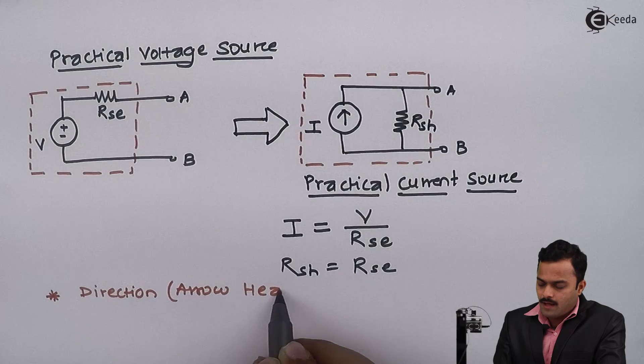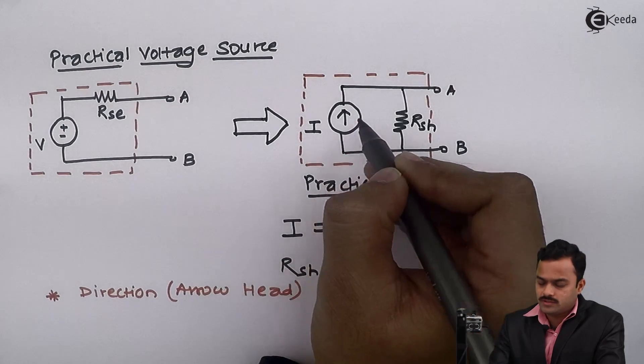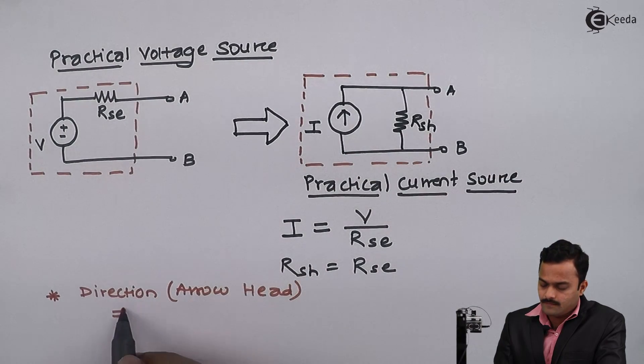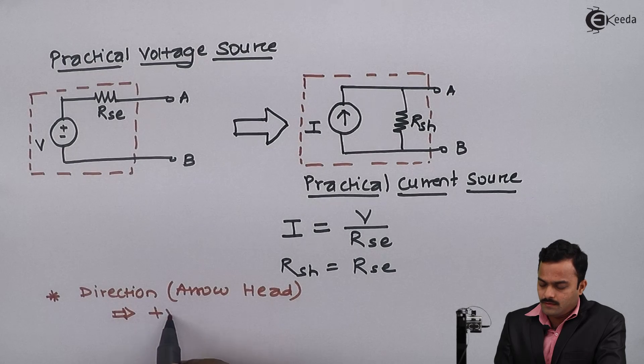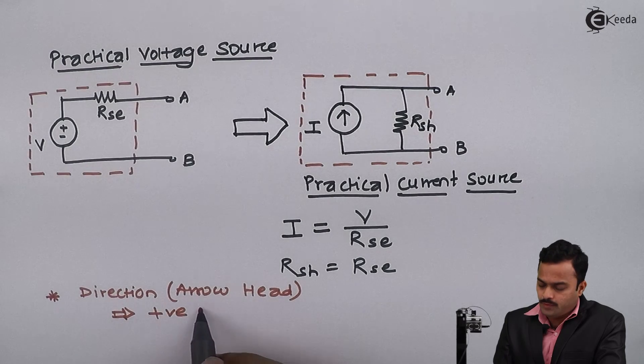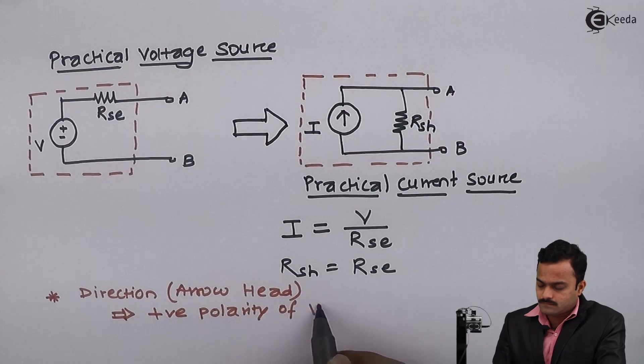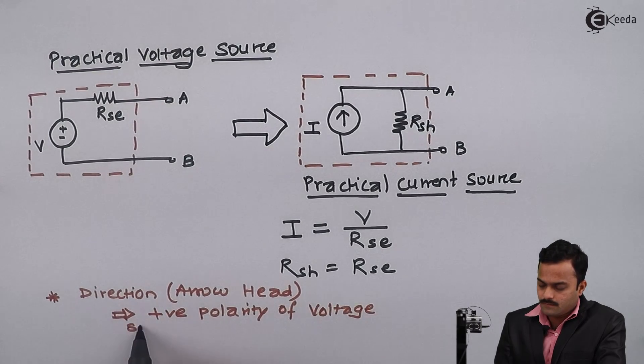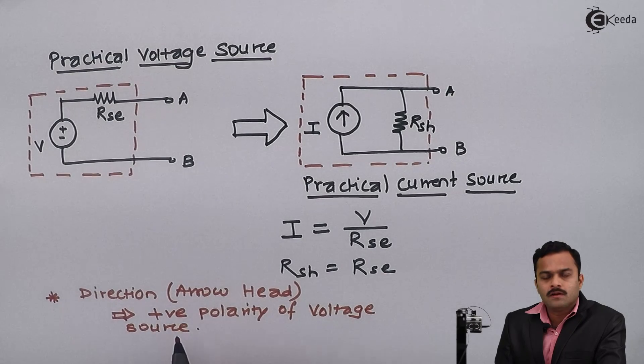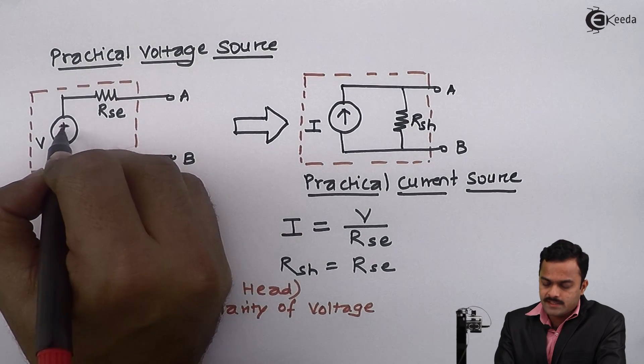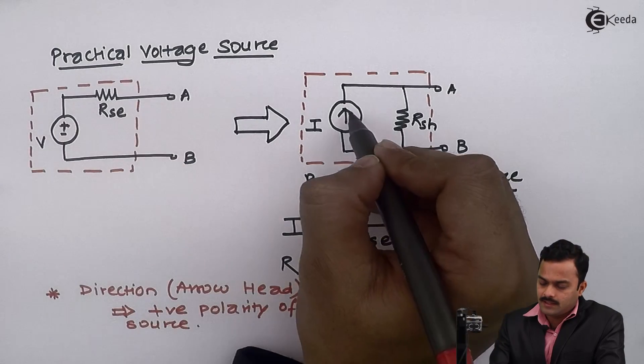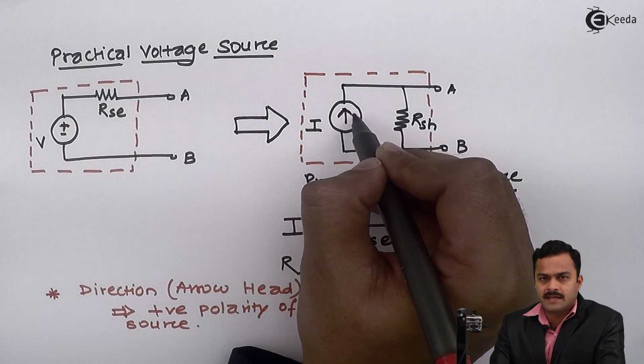That means arrowhead in a current source implies positive polarity of voltage source. Since positive polarity is given like this, current direction or arrowhead will be like this.